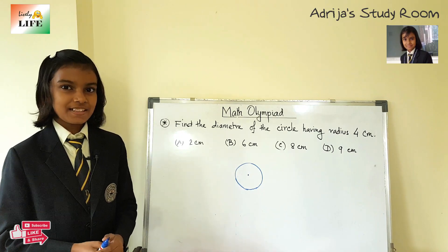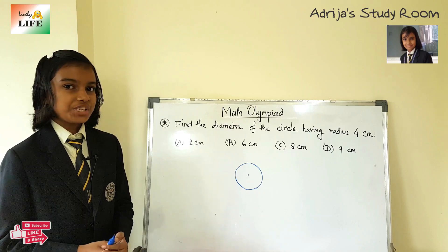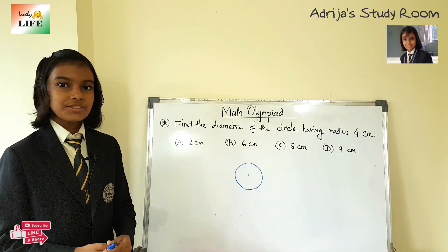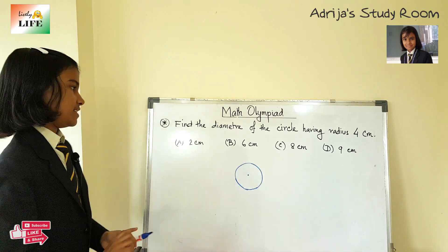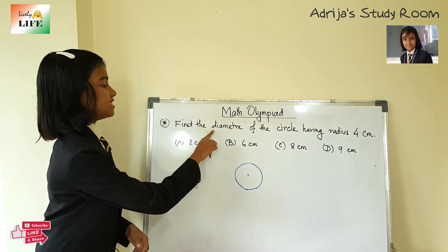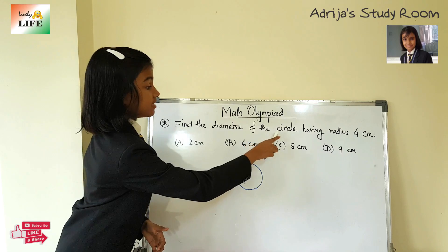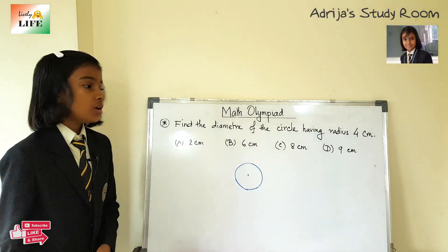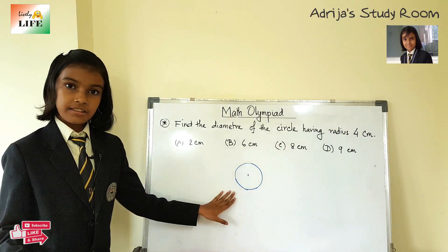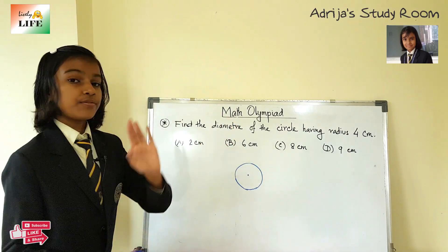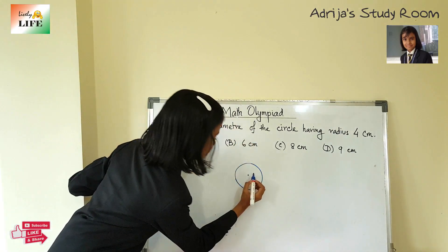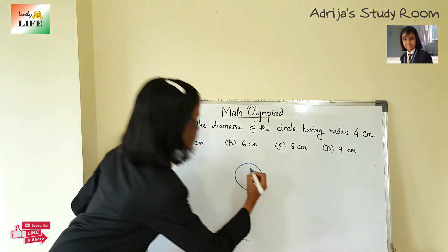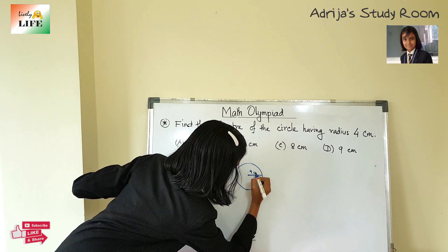Hello friends, welcome to my study room. Today we are going to solve some questions about geometry. The first question is: find the diameter of the circle having radius 4 centimeters. This is a circle and it has a radius of 4 centimeters.